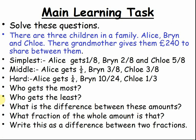Solve these questions. There are three children in a family: Alice, Brian and Chloe. Their grandmother gives them £2.40 to share between them. Simplest: Alice gets one eighth, Brian gets two eighths, Chloe gets five eighths. Alice gets one half, Brian gets three eighths, Chloe gets three eighths. Alice gets a quarter, Brian gets ten twenty-fourths and Chloe gets a third. Who gets the most? Who gets the least? What is the difference between these amounts? What fraction of the whole amount is that? Write this as a difference between the fractions. Pause the video and complete this activity.